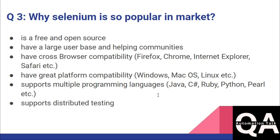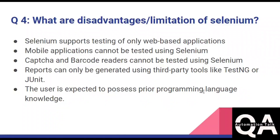The next question is: why is Selenium so popular compared to other tools? The reasons are that it is free and open source, has a large user base and large helping communities, supports cross-browser compatibility and cross-platform compatibility, supports multiple languages like Java, C#, Ruby, and Python, and also supports distributed testing via Selenium Grid.